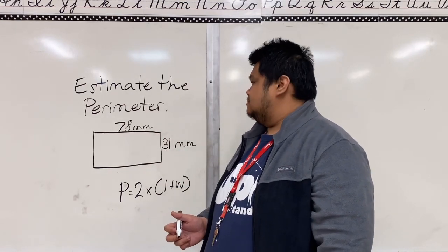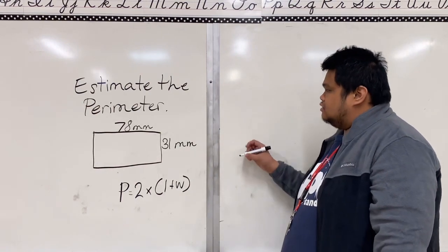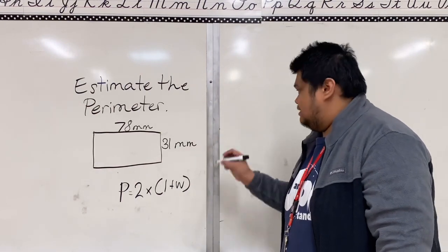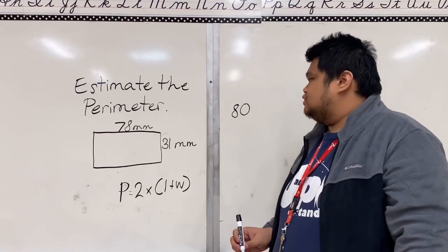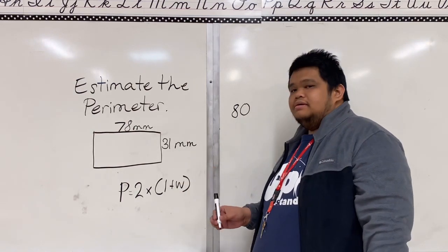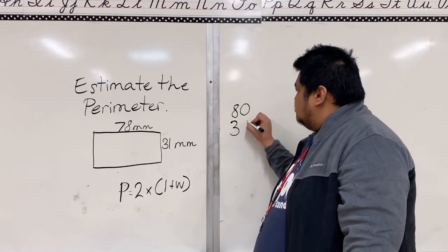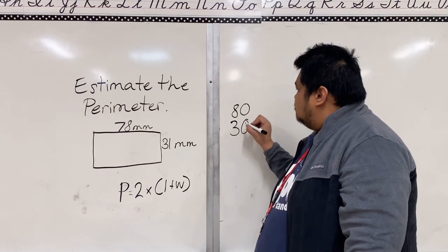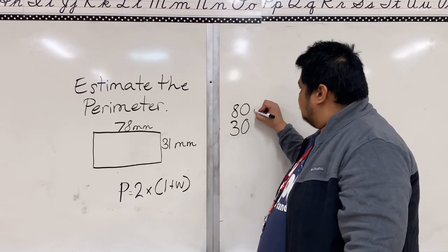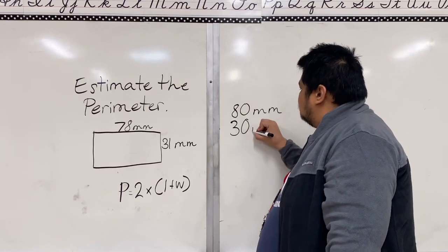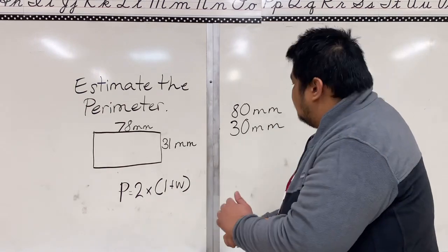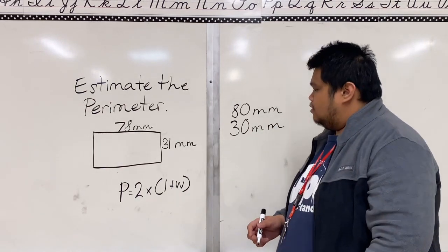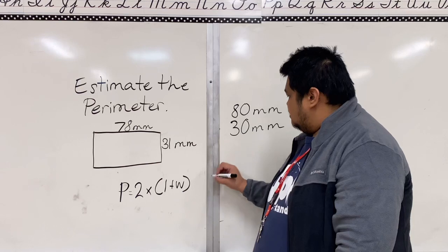So the nearest tens of 78 is 80, and the nearest tens of 31 is 30. Don't forget to copy the unit. I suggest you copy this in your notebook as well.